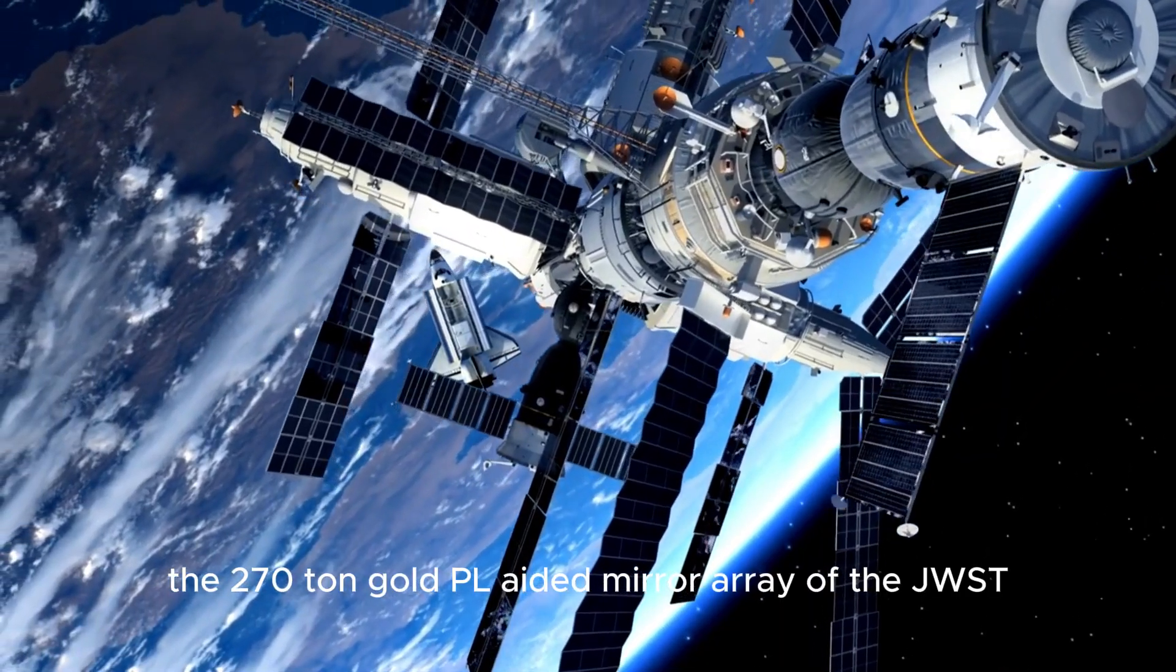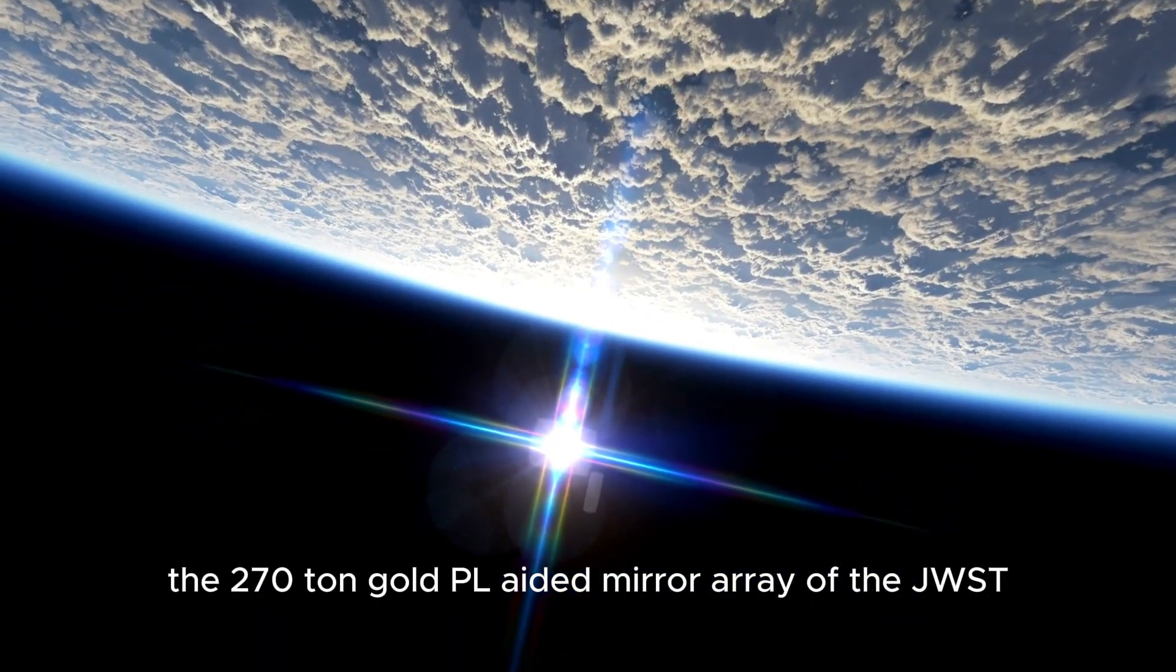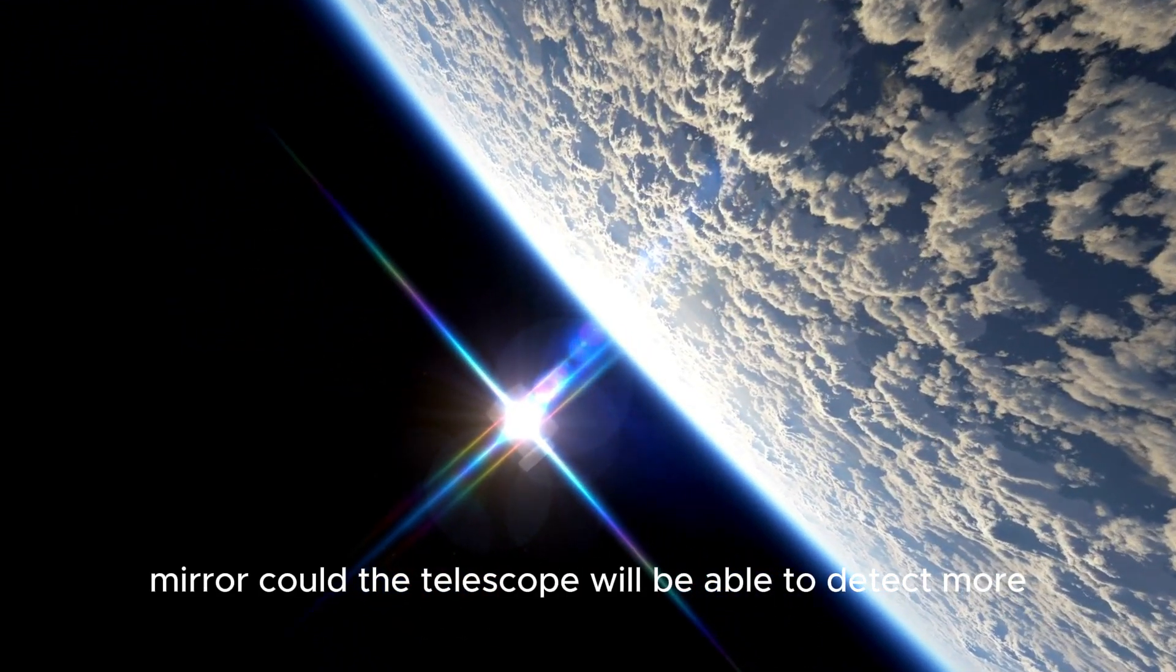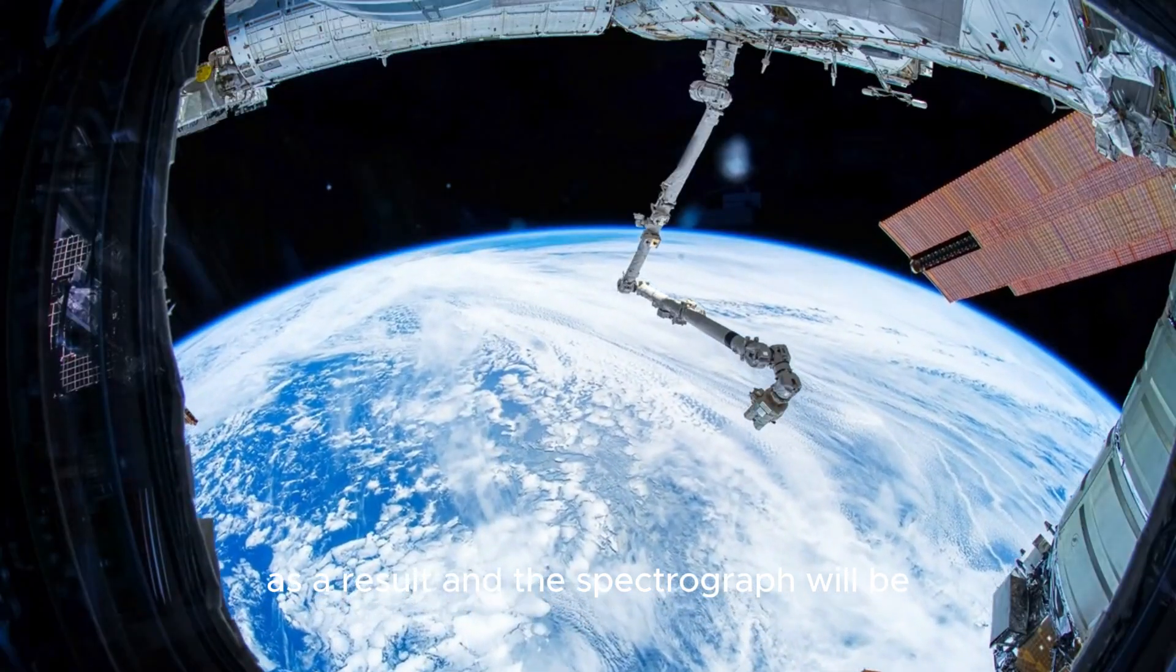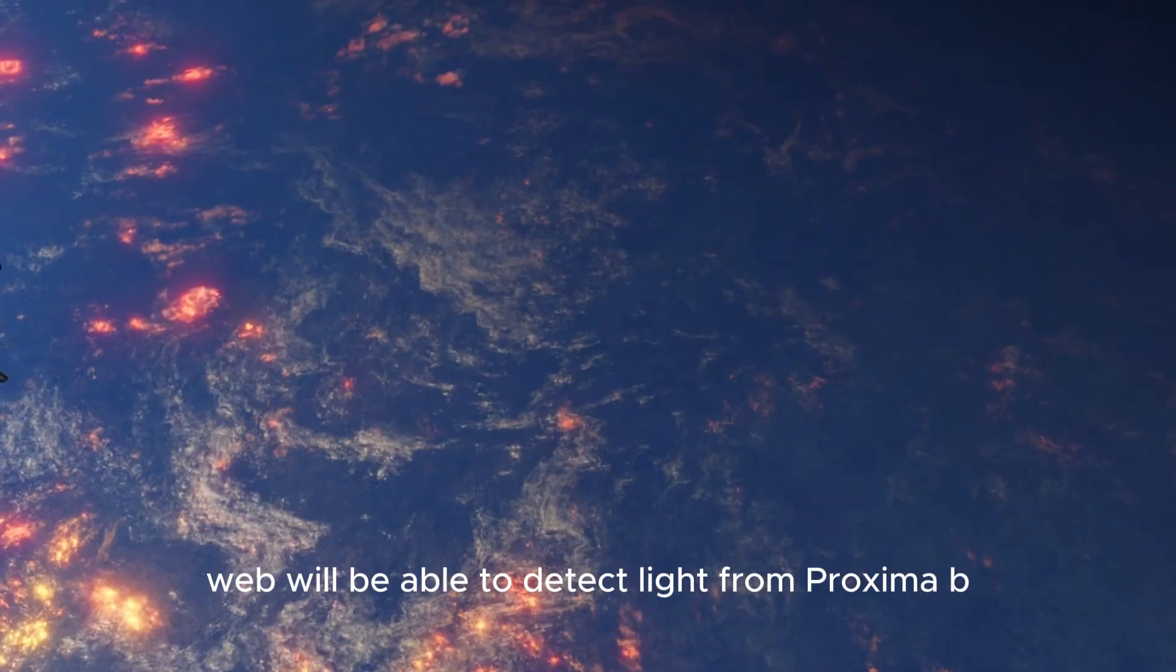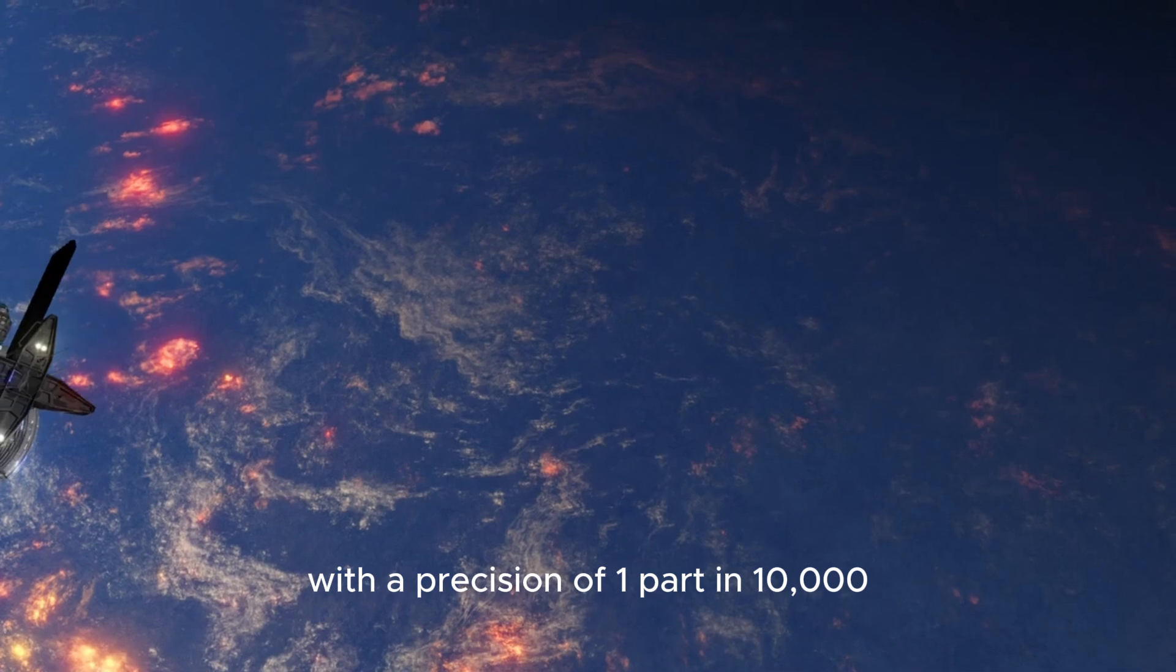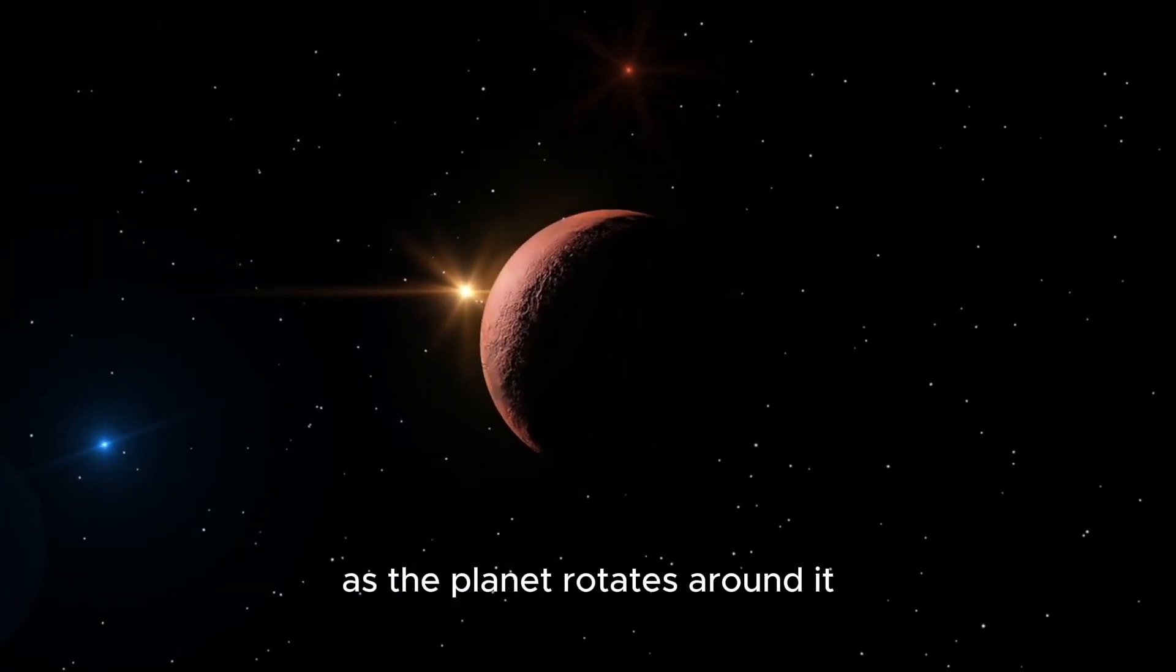The 270-ton gold-plated mirror array of the JWST the size of a tennis court can capture much more light than the Hubble mirror could. The telescope will be able to detect more minute changes in brightness as a result, and the spectrograph will be able to collect more starlight that has passed through the atmosphere. Webb will be able to detect light from Proxima b and separate it from the stellar emission with a precision of one part in 10,000 by carefully watching Proxima Centauri as the planet rotates around it.